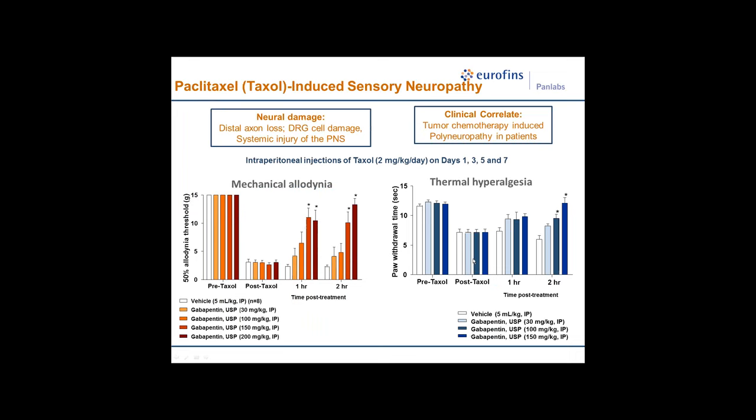Taxol-induced sensory neuropathy involves distal axon loss and DRG cell damage, producing systemic injury in the peripheral nervous system. The clinical correlate has good face validity — patients develop polyneuropathy on taxol chemotherapy. In the model, we inject taxol at 2 mg/kg per day on days one, three, and five, producing sustained long-term neuropathy. We have multiple endpoints in the same animal: allodynic threshold reversed dose-dependently by gabapentin, as well as thermal hyperalgesia.